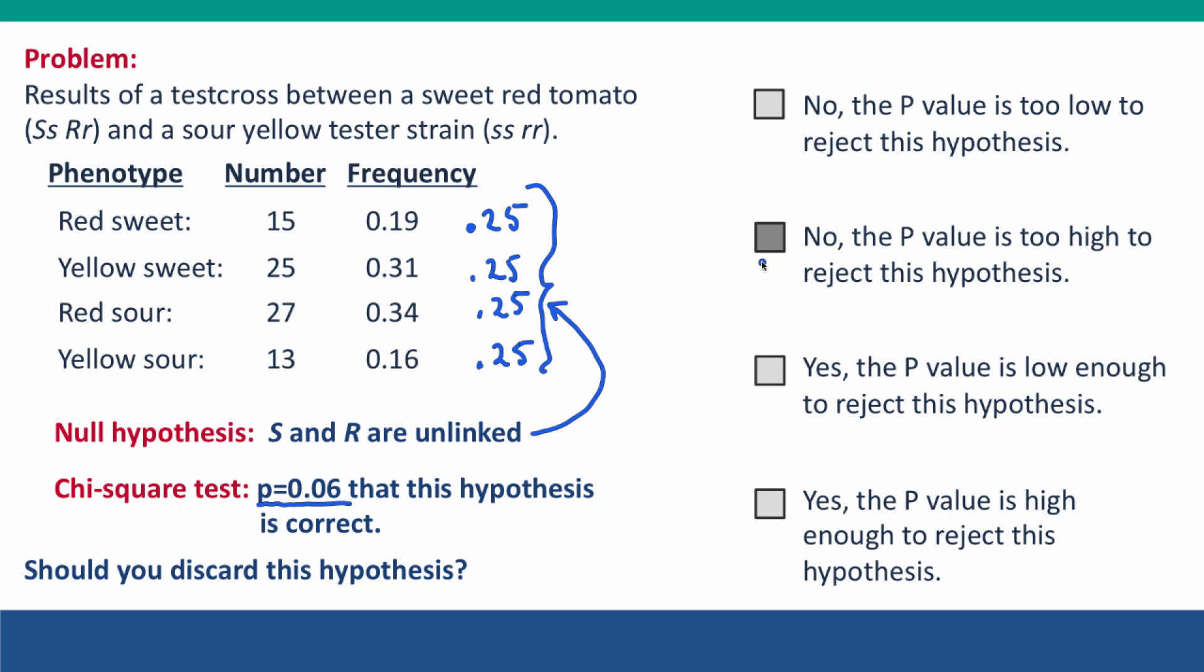And the answer is no, you shouldn't discard your hypothesis because the p-value is above the cutoff of 0.05. There's more than a one in twenty chance that this hypothesis, that the genes are unlinked, is correct.